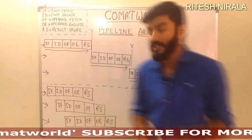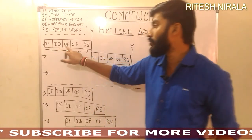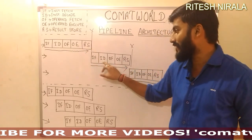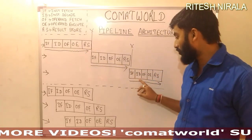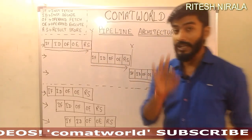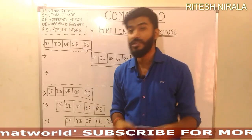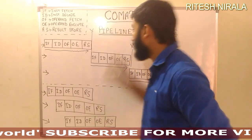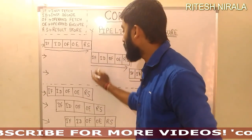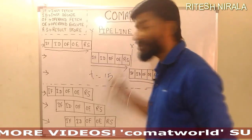If you see the total time span, counting 1, 2, 3, 4, 5, 6, 7, 8, 9, 10, 11, 12, 13, 14, 15 — that means for three instructions to execute, the total time taken is 15 units. That is the non-pipeline architecture.